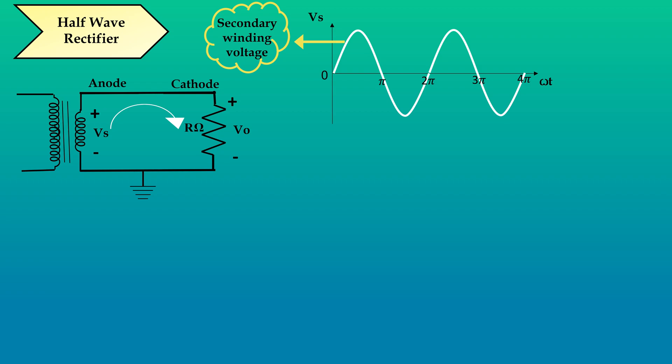Similarly, during the negative half cycle, the current flows in opposite direction. That means the current direction is from cathode to anode. Therefore, diode acts as an open circuit. Therefore, there will be no current flow in the circuit. So the voltage across the load is zero.